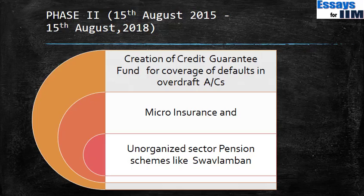In the second phase, which runs over three years, there is creation of a credit guarantee fund for the coverage of defaults in overdraft accounts. Since people can borrow Rs. 5,000 in the first phase, not all will return the money, so banks could run into losses. To cover those, a credit guarantee fund will be opened by the Government of India and guaranteed by a central government organization, so that banks do not suffer in case of defaults.